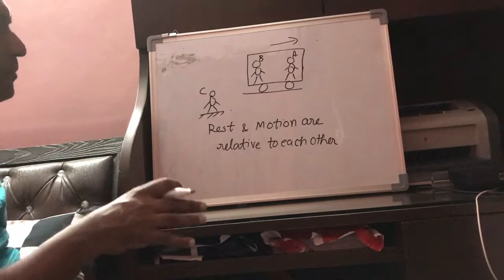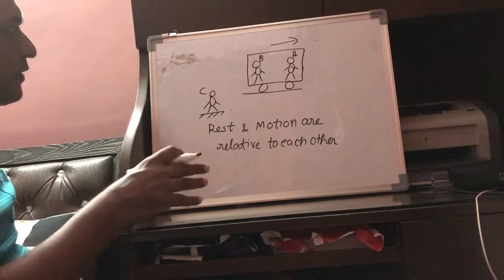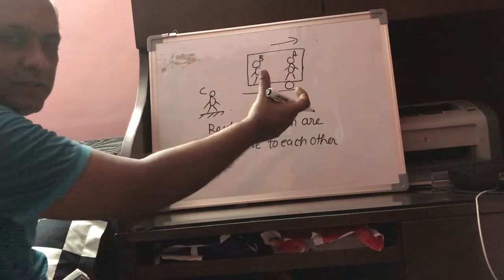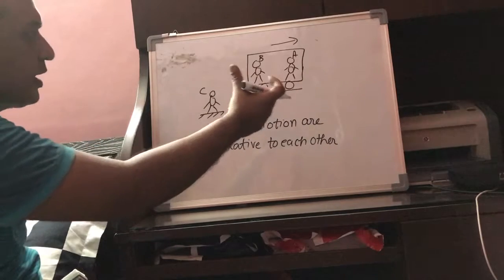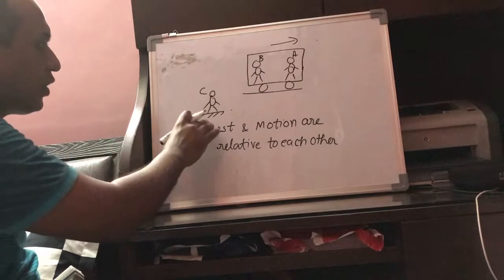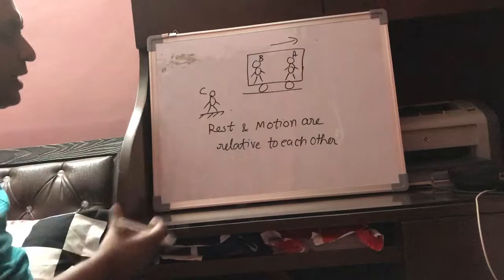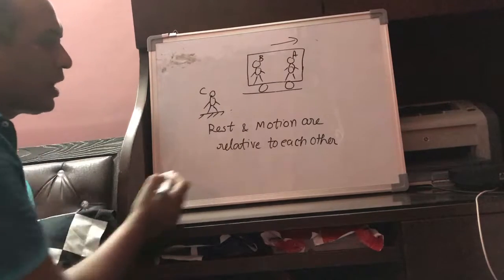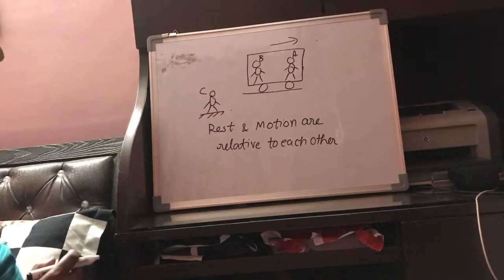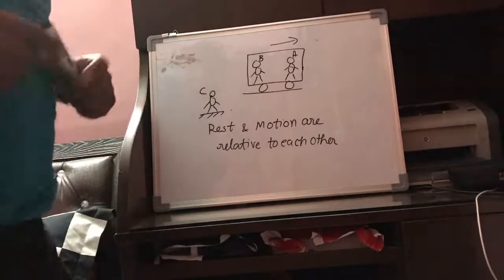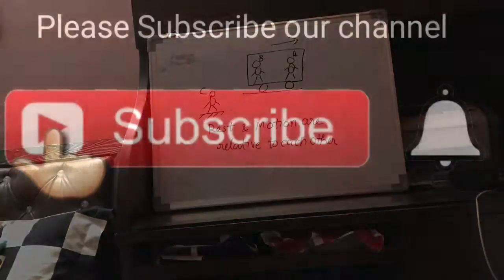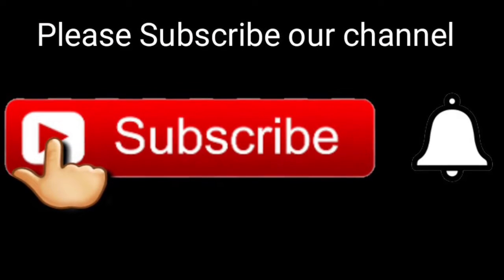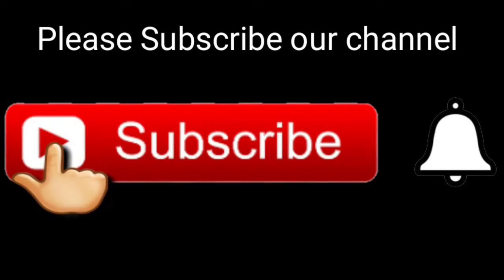So whether an object is at rest or in motion depends on from where that object is being observed. If our observation point is inside the compartment, then A is at rest. If our observation point is on the ground, then we say that A is in motion. So rest and motion are relative to each other.